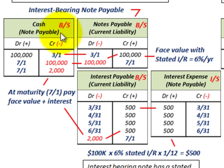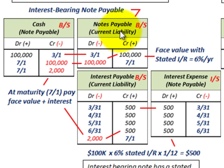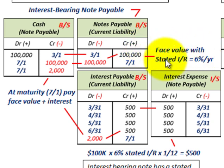Let's look at our journal entries and how we'd record this on March 1st when the notes payable is issued. We would debit or increase our cash by $100,000, because that's what Corporation A is receiving from Bank B. Then we'd record this notes payable as a current liability on the balance sheet and credit that for $100,000 — that's the face value — with a stated rate of interest of 6% per year.